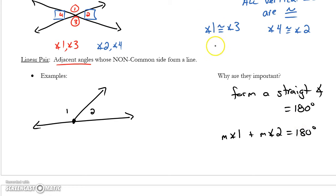With vertical angles, we would say that the measure of angle 1 equals the measure of angle 3 and the measure of angle 4 equals the measure of angle 2. The next video will go over the examples on the next page.